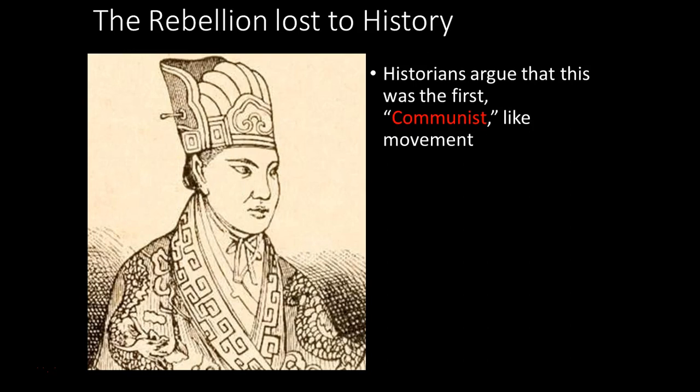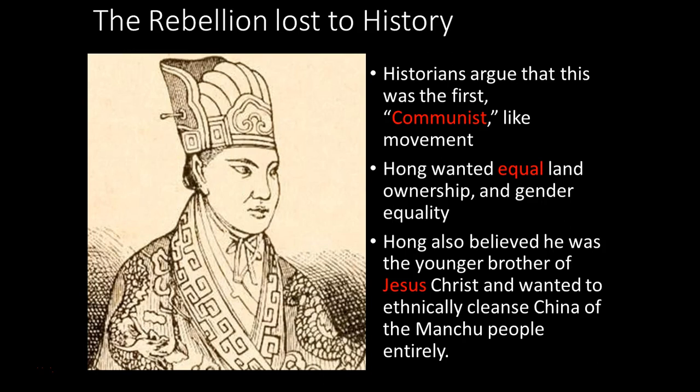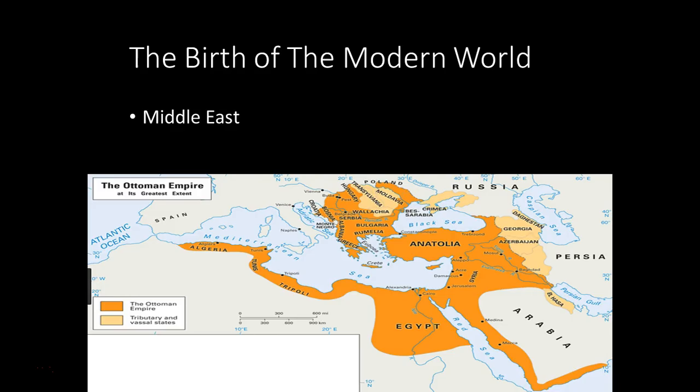You could argue the Taiping Rebellion is the first communist revolution in the sense that it preached equality, tried to share wealth, create a commune system, and strove for gender equality. Hong Xiuquan also believed he had to kill the Manchu people entirely — an ethnic cleansing, essentially genocide. He is eventually put down, but it weakens China enough that other nations come in and take advantage.